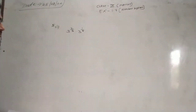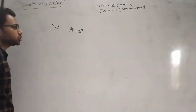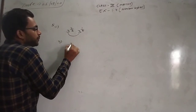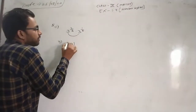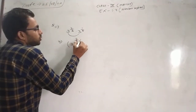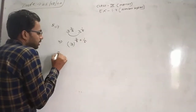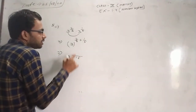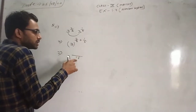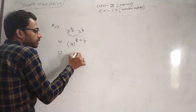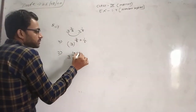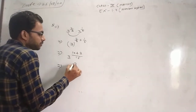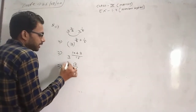Since both bases are the same, the powers will be added: 2 by 3 plus 1 upon 5. So we will write 3 to the power — finding the common denominator, 5 times 3 is 15. So 5 times 2 is 10, and 5 times 1 is 3. That gives 3 to power 13 upon 15. This is how we write it.